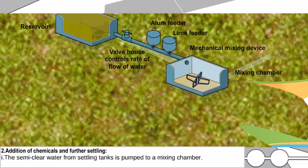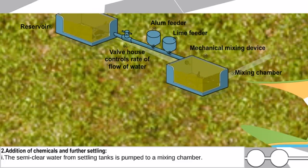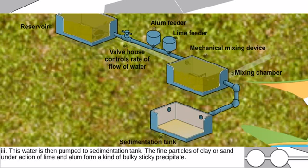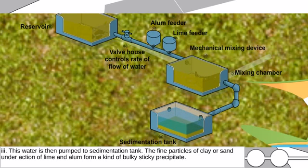Stage two: addition of chemicals and further settling. The semi-clear water from settling tanks is pumped to a mixing chamber. In the mixing chamber, the water is mixed with alum and lime, and agitated by huge mechanical blades. This water is then pumped into a sedimentation tank.